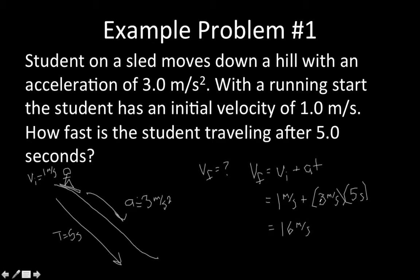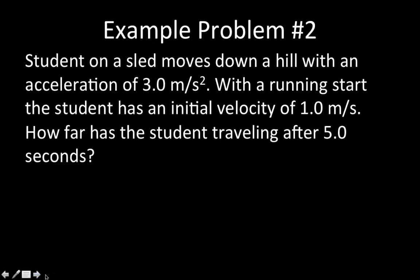In other words, if you had just been standing there at the top and started from an initial velocity of zero, after five seconds you would have been traveling 15 meters per second. But in this case, starting out with 1 meter per second of velocity adds that extra 1 m/s to the result.